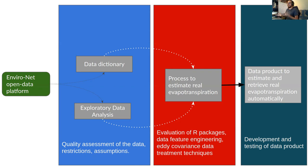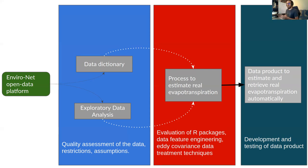The second step was the process to estimate evapotranspiration. We evaluated packages and ended up using the bigleaf R package. We did some data wrangling and feature engineering, and also evaluated some eddy covariance data treatment techniques to clean the data.